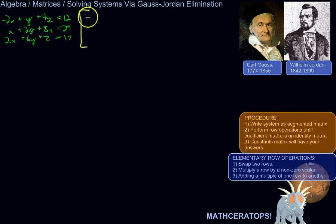We'll write the coefficients, negative 2, 1, 4. So here's the coefficient matrix, 1, 2, 8, 2, 6, 1. And then our constant matrix here, 12, 29, 17.